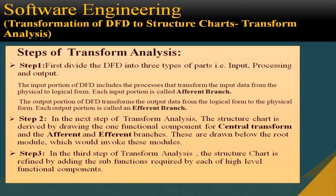The steps of transform analysis are as follows. In the first step, the DFD model — the output of structured analysis — is divided into three parts: input, processing, and output. The input portion of the DFD includes the processes that transform the input data from physical to logical form. Each input portion is called an afferent branch.